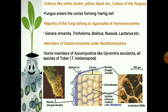Ectomycorrhizae appear in various colors like white, brown, yellow, black, etc., depending on the color of the fungus. The fungus enters the cortex forming the Hartig net but never goes inside the endodermis or stele. They form a mantle of varying thickness. Majority of the fungi belong to the Agaricales of Hymenomycetes and Basidiomycotina. Most members belong to the genera Amanita, Tricholoma, Boletus, Russula, and Lactarius. Members of Gasteromycetes and Basidiomycotina like Rhizopogon and Scleroderma are also involved. Some members of the Ascomycotina like Gyromitra, Escalenta, and all species of Tuber also form mycorrhizae.